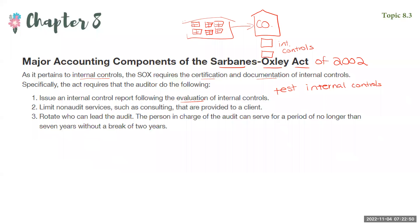Also, external auditors should limit their non-audit services. When they review a company's financials, that's called an audit, and we want to make sure they're really focused on that. Limiting non-audit services is important because it can distract from the audit or cause a potential conflict of interest.